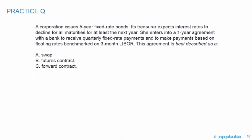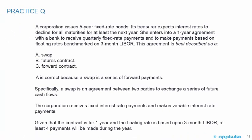A corporation issues five-year fixed-rate bonds. Its treasurer expects interest rates to decline for at least the next year. She enters a one-year agreement with a bank to receive quarterly fixed-rate payments and to make payments based on floating rates benchmarked on three-month LIBOR. This is best described as: A) a swap, B) a futures contract, or C) a forward contract. A is correct — a swap is a series of forward payments. C is wrong because there's more than one payment; B is wrong because futures contracts are traded on an exchange and are standardized.